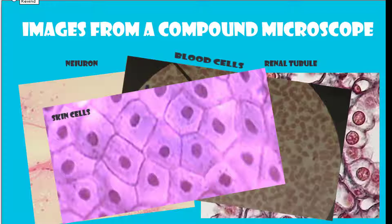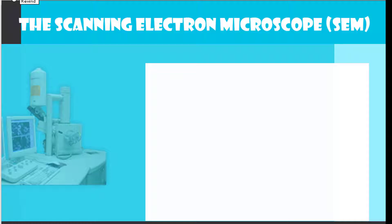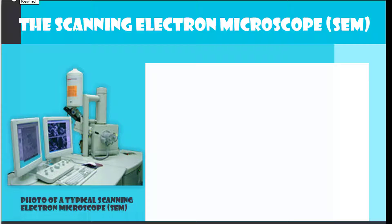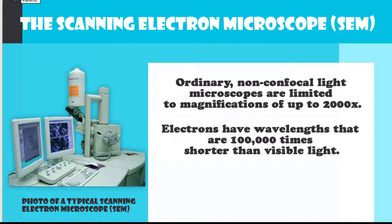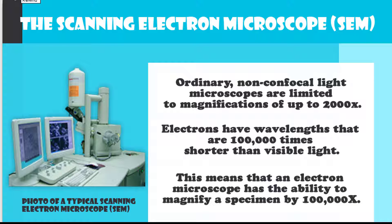The scanning electron microscope or SEM. Ordinary non-confocal light microscopes are limited to magnifications of up to 2000x. Electrons have wavelengths that are 100,000 times shorter than visible light, which means that an electron microscope has the ability to magnify a specimen by 100,000 times.